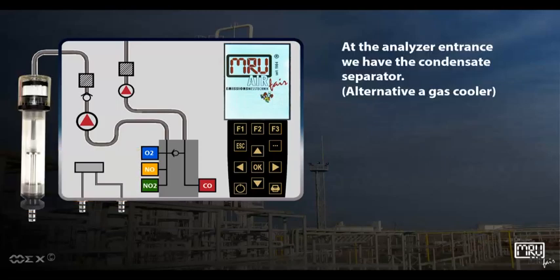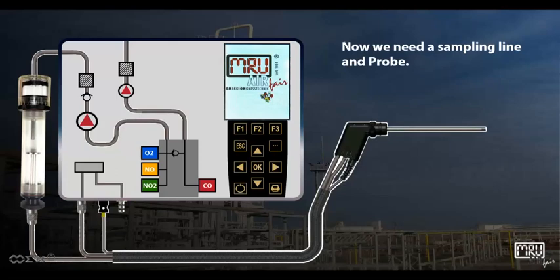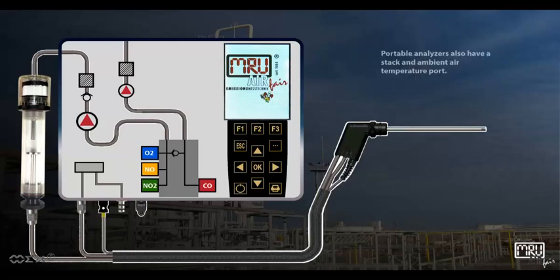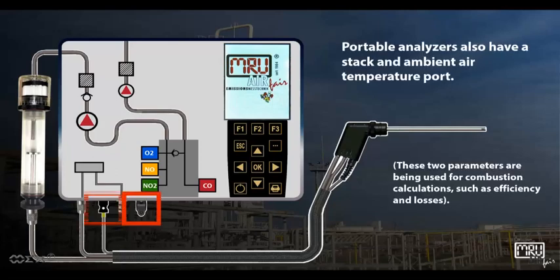At the analyzer entrance we have the condensate separator, or alternatively a gas cooler. We also need a sampling line and probe. Portable analyzers have a stack and ambient air temperature port — these two parameters are used for combustion calculations such as efficiency and losses. Stationary analyzers can have optional stack temperature as well.